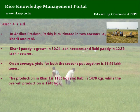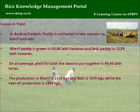Lesson 4 — Yield. In Andhra Pradesh, paddy is cultivated in two seasons: Kharif and Rabi. Kharif paddy is grown in 30.04 lakh hectares and Rabi paddy in 12.39 lakh hectares. On an average, yield for both seasons put together is 99.46 lakh tonnes. The production in Kharif is 1,150 kg per hectare and Rabi is 1,470 kg per hectare, while the overall production is 1,240 kg per hectare.